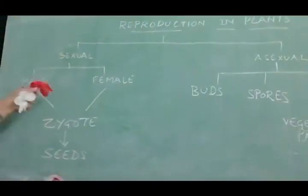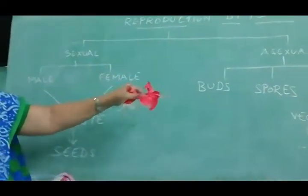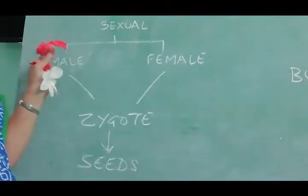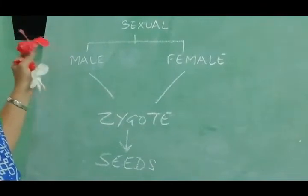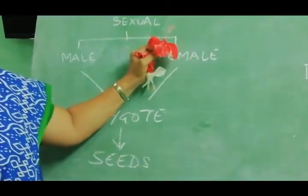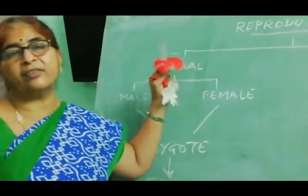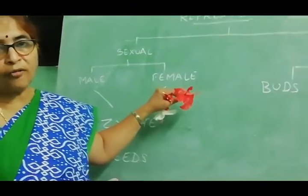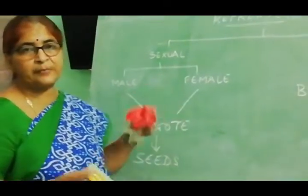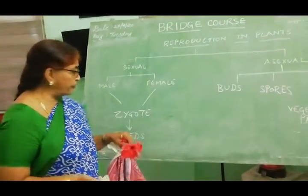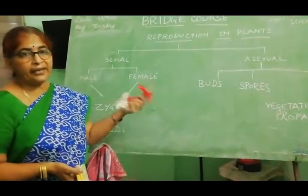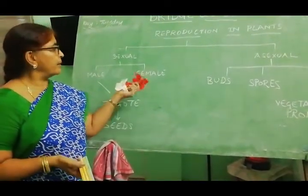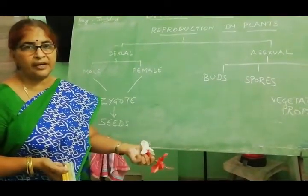To quickly revise: there are two types — sexual and asexual reproduction. In sexual reproduction we have male and female parts. Male parts are stamen, anther, and pollen grains — pollen grains are the male gametes. Female parts are stigma, style, and ovary — inside the ovary we have the ovules, which are the female gametes. When the pollen grain fuses with the ovule it forms a zygote. The zygote develops into a fruit, and inside the fruit we find seeds. These seeds reproduce a similar kind of plant — like a mango tree will give rise to a mango tree again.